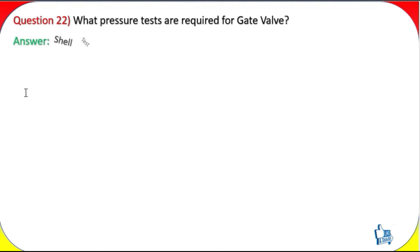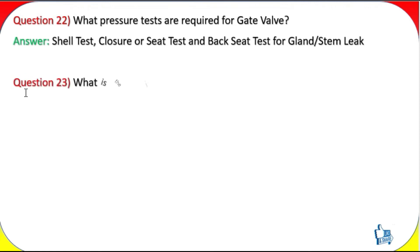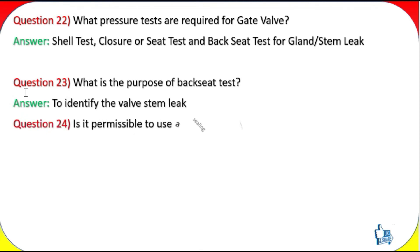Question 22: What pressure tests are required for a gate valve? Answer: Shell test, closure/seat test, and back seat test for gland/stem leak. Question 23: What is the purpose of the back seat test? Answer: To identify the valve stem leak.